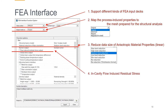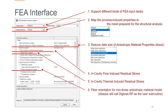The fourth option is called flow-induced residual stress output, which means the in-cavity flow-induced residual stress. And this one is called initial stress output, which means in-cavity thermal-induced residual stress. The last one is fiber orientation output, which helps us export the fiber orientation tensor. Abaqus will call DigiMAT as the user subroutine, and DigiMAT will handle the material model in Abaqus. There is also the possibility to go further to a non-linear material model by using DigiMAT-RP.